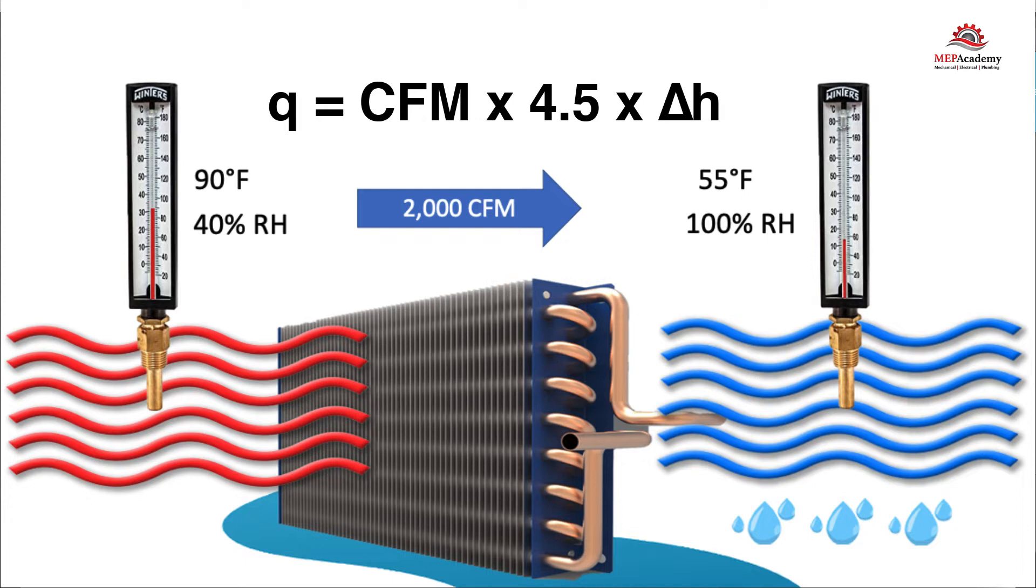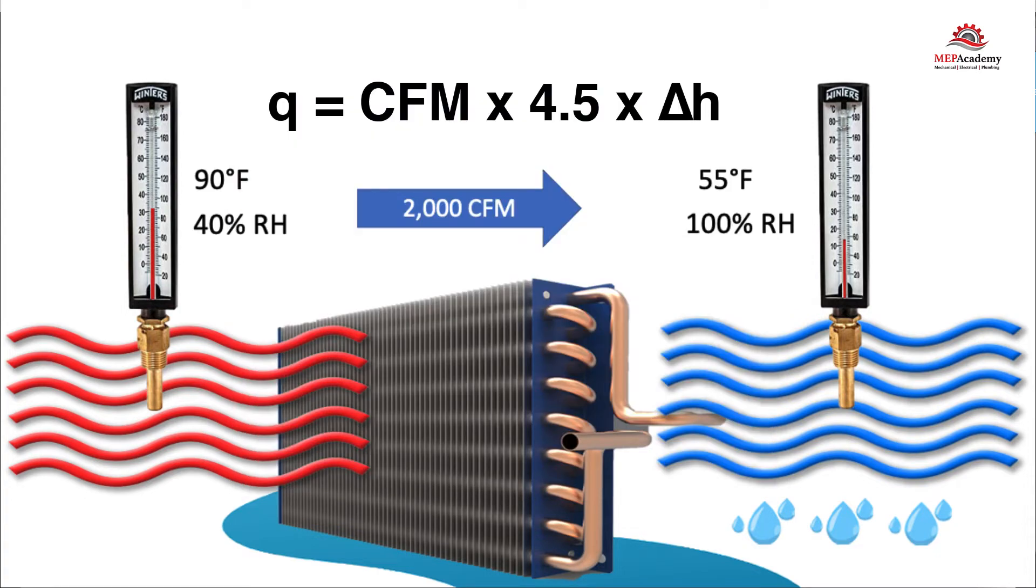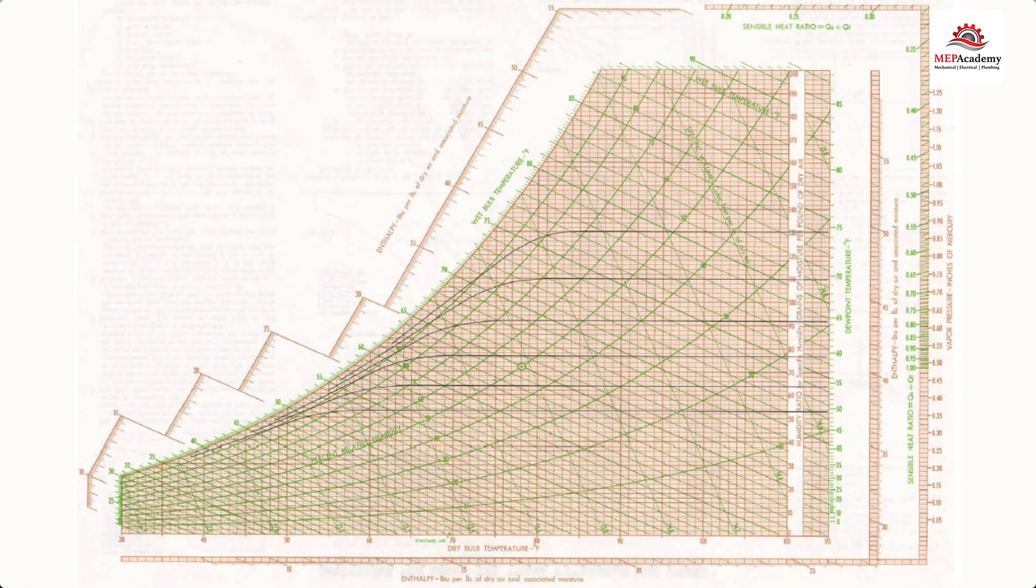Step 1 is to plot the entering and leaving air conditions on a psychrometric chart to determine the enthalpy. For the entering air conditions of 90 degrees Fahrenheit and 40% relative humidity, we enter here along the horizontal part of the chart that reflects temperature, and then we go vertically straight up.